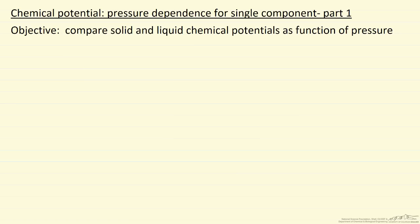In this screencast, we're going to look at the chemical potential and its dependence on pressure for just a single component, and we're going to further narrow it down by just comparing solid and liquid, and therefore getting an idea of how equilibrium between the two changes with pressure. The first thing we have to do is look at the equation that relates chemical potential, which for a single component is the same as Gibbs free energy.